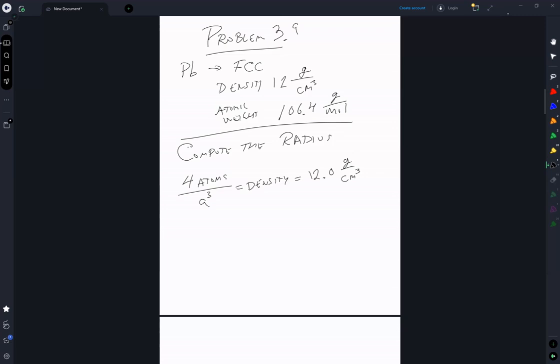We also know because it's FCC that square root of 2a is equal to 4r, or a is equal to 4 over square root of 2r.